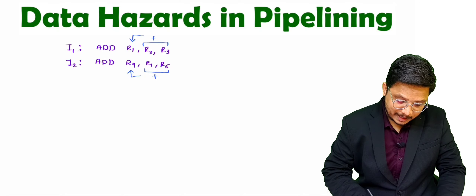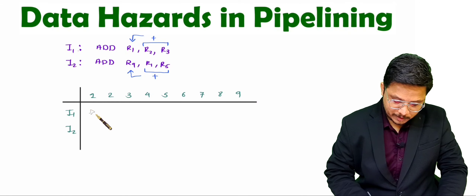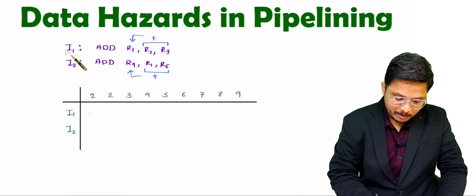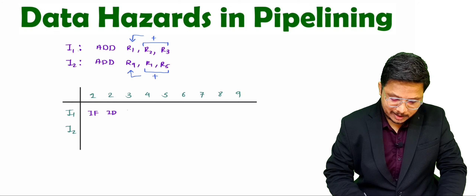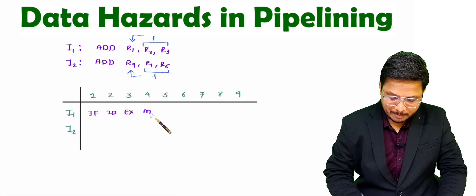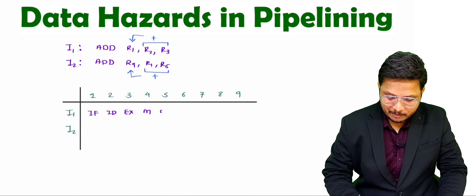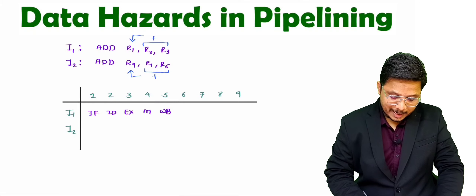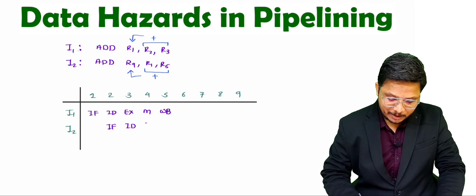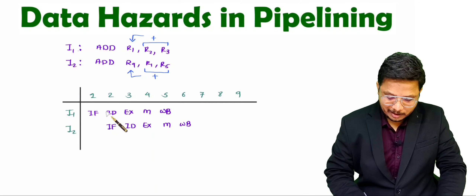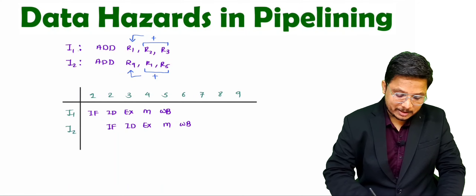Let us see how things happen in a five-stage pipeline. In the first cycle I1 is fetched, then instruction decode, execute, memory, and write-back. I2 is fetched in the second cycle, followed by instruction decode, execute, memory, and write-back. Normally things proceed like this in a pipeline structure.